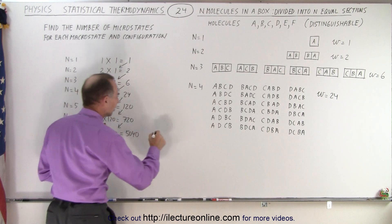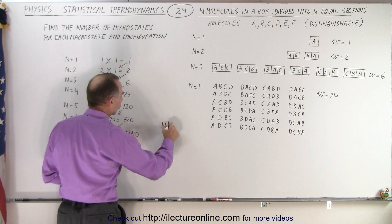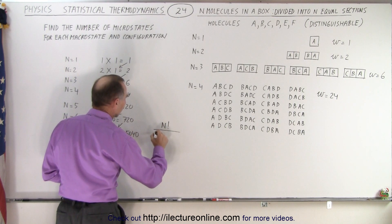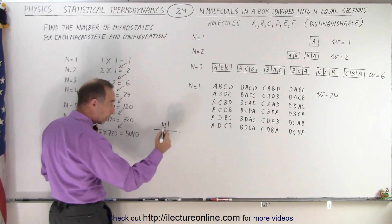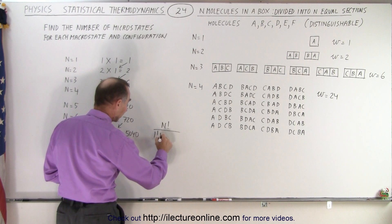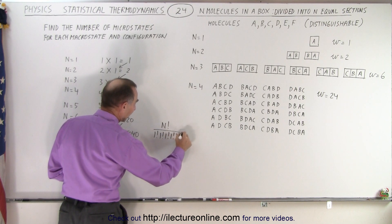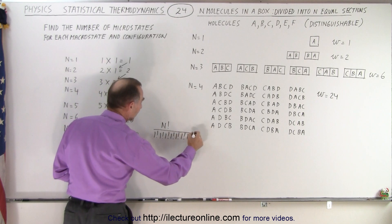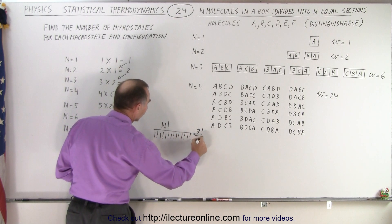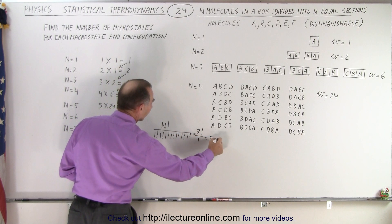you'd have to do it like this. So in this case, you end up with n factorial divided by—in this case, since you have one molecule in each, that would be 1 factorial times 1 factorial times 1 factorial. That's 4, that's 5, that's 6, and that's 7. So notice that this would be equal to 7 factorial over 1, or 5,040.